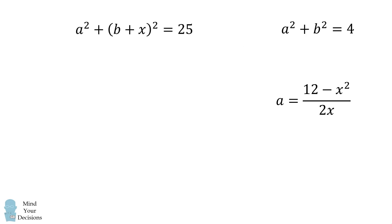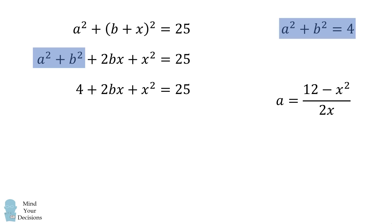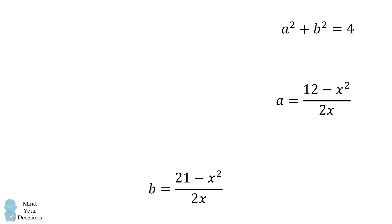From here, we'll do the same thing in this equation, except we'll solve for b. We'll first expand out. We then have a squared plus b squared, and that's equal to 4. We'll solve this equation for b. We'll subtract 4 from both sides, subtract x squared from both sides, and then divide both sides by 2x. We thus have b in terms of x.